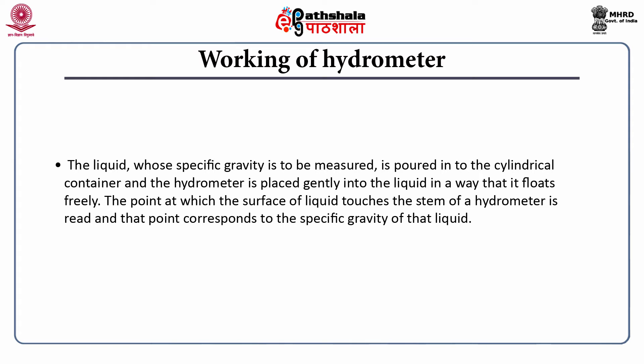The point at which the surface of the liquid touches the stem of the hydrometer is read. Once you dip the hydrometer into the liquid, it will automatically float as explained earlier. Wherever the value comes over, that is the reading you need to measure, and this point corresponds to the specific gravity of the liquid.